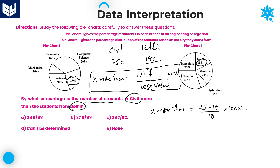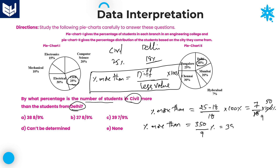The difference is 25 minus 18 = 7. So it's 7 divided by 18 into 100%. You can cancel: 2 nines are 18, giving 50 times. Therefore the required percentage more than equals 7 into 50 = 350, divided by 9%. Taking the mixed fraction: 9 times 38 = 342, remainder 8, giving 38 and 8/9 percent. That is 38 8/9%, and option A is the right answer.